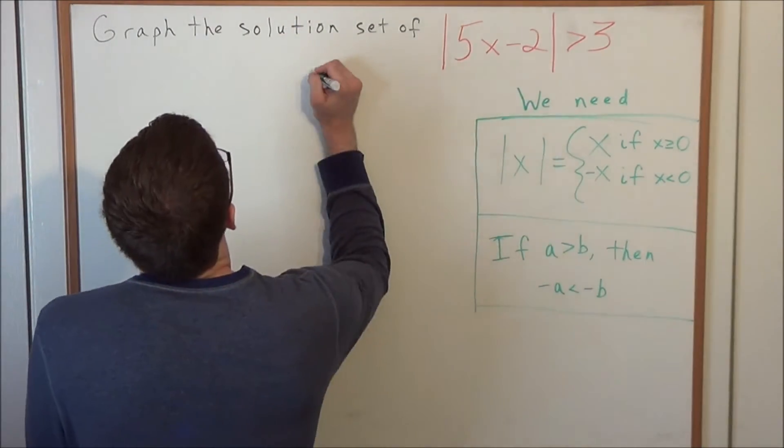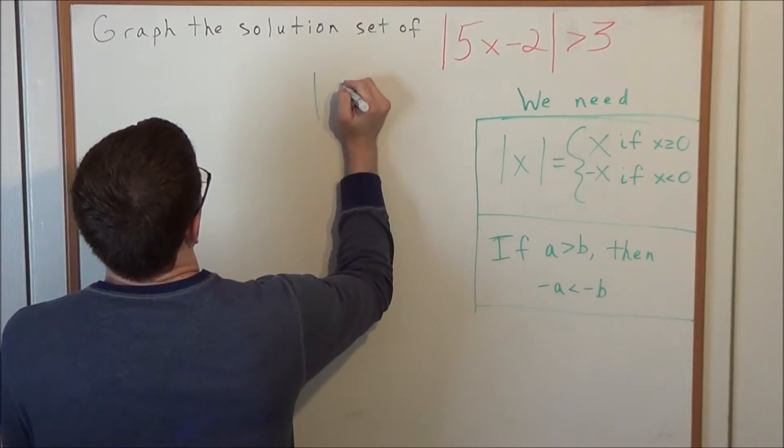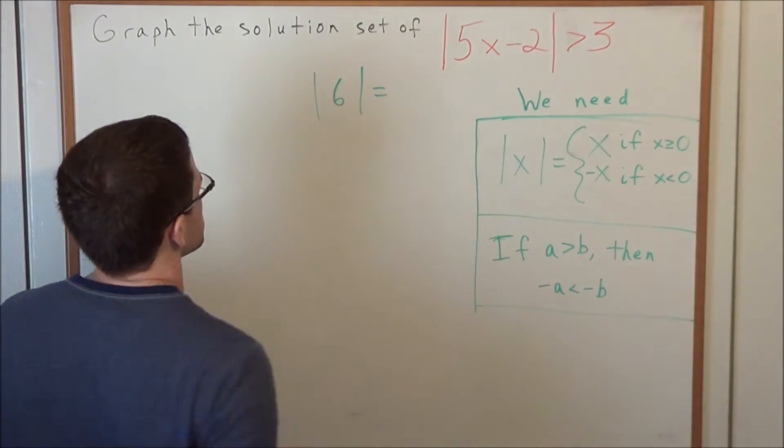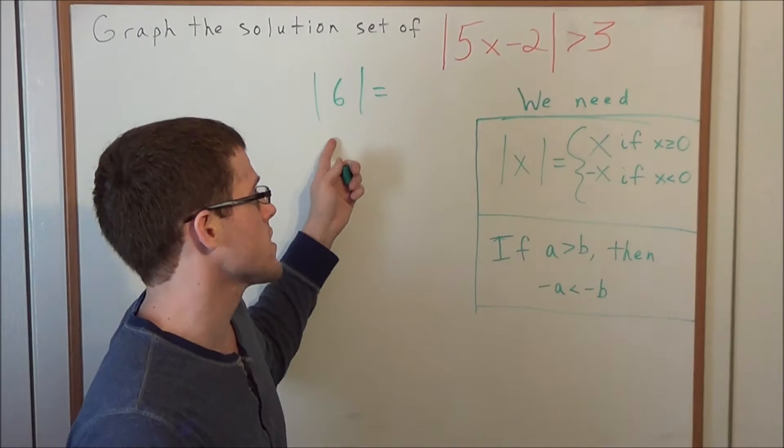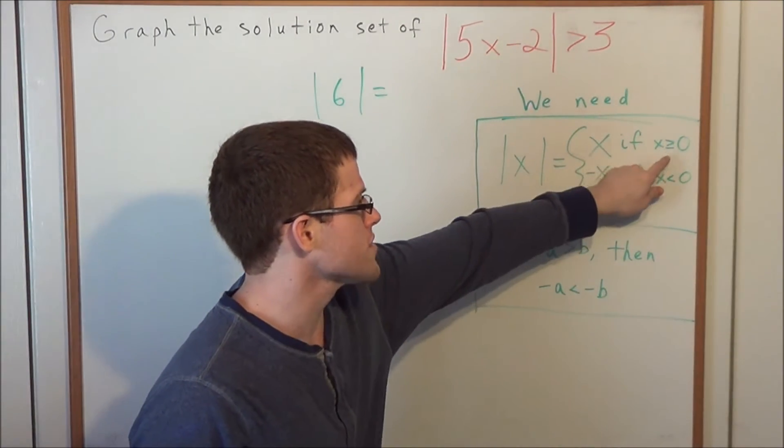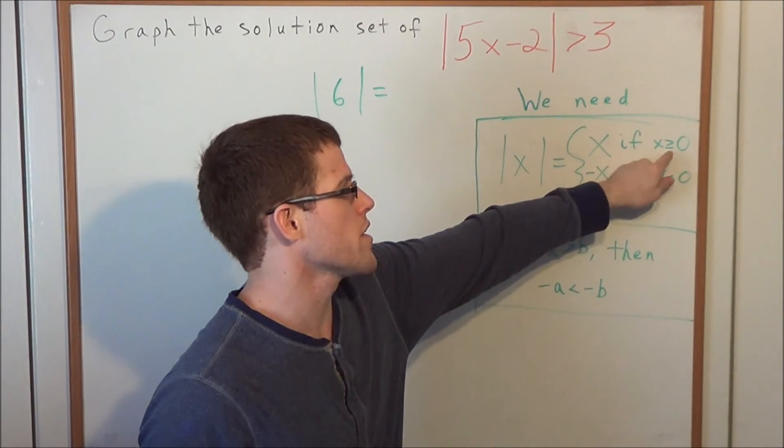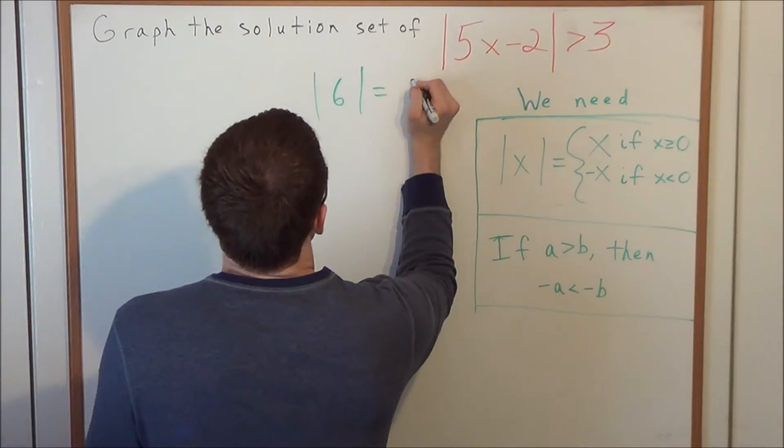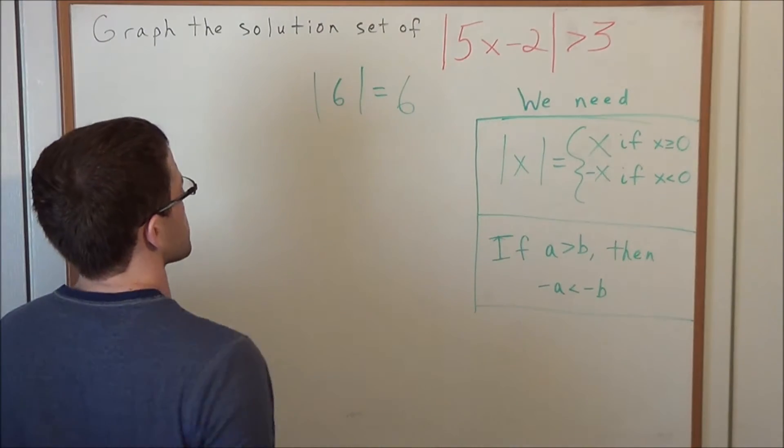Really all this means, the best way to look at this is in terms of an actual example. When we have absolute value of 6, most of you already know that this answer is 6, but what does this mean? We're taking the absolute value of 6, and 6 falls into this category. 6 is greater than or equal to 0, so we just simply rewrite whatever the input is.